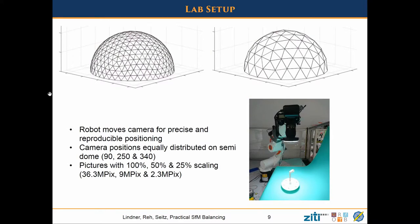We have a lab setup and we also did some real-world examples outside. In the lab setup we have a small robot arm where we place the camera on top, so we can move the camera quite precisely and reproducibly with below-millimeter accuracy. We have an object on a table that rotates, so we can reach all positions around the object in a semi-dome. We chose recorded positions shown as mesh points, giving us versions with 340, 250, and 90 pictures.